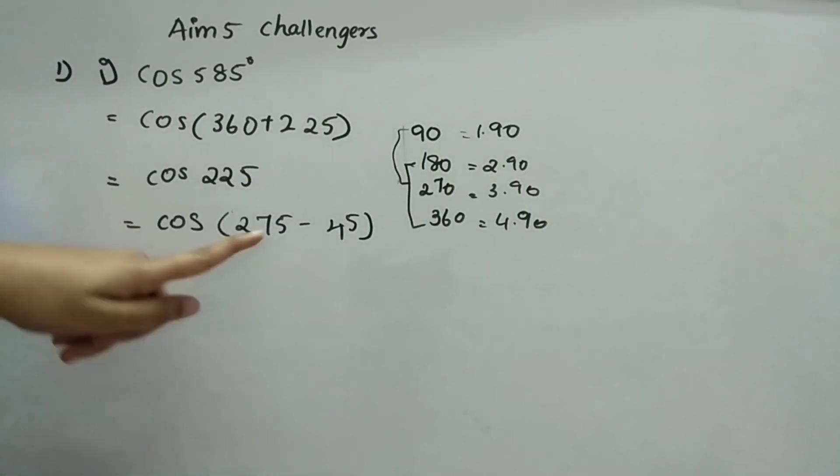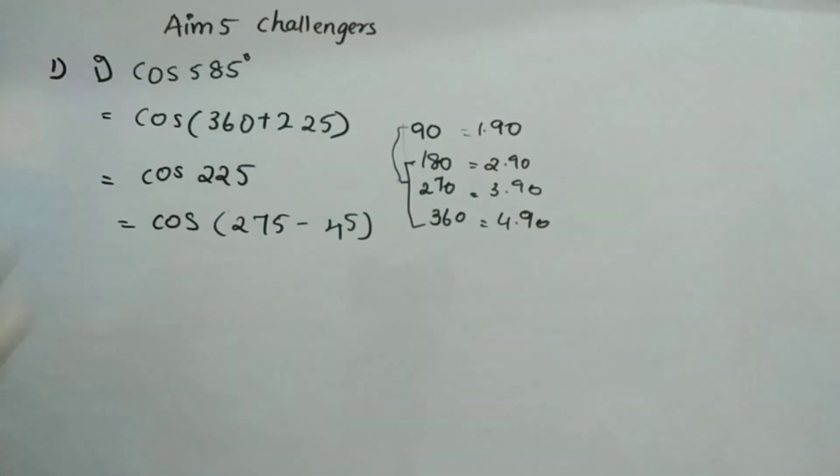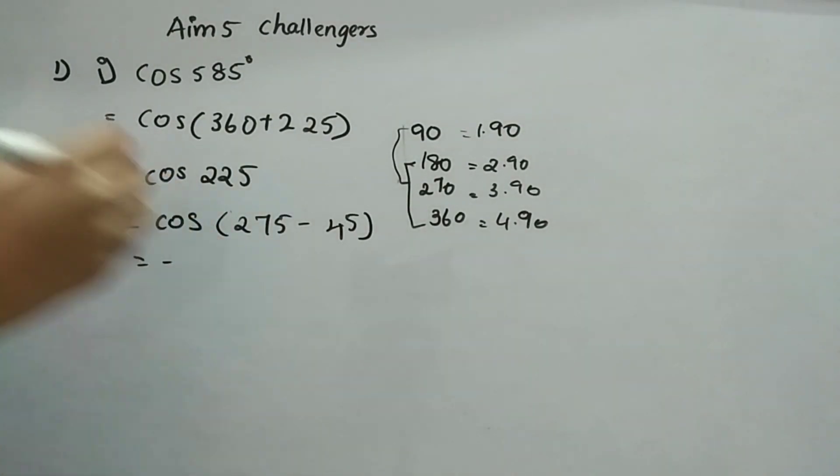Whenever you are dealing with 180 and 360, the value won't change. The ratio will be same and it will be positive. When you are dealing with odd numbers, it will become negative and cos will become sine.